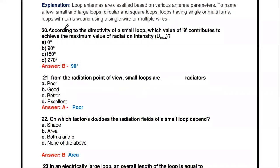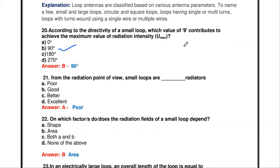According to the directivity of a small loop, which value of theta contributes to the maximum value of radiation intensity? The answer is theta equal to 90 degrees. At 90 degrees, the maximum value of radiation intensity is achieved.